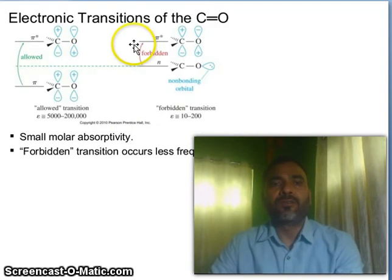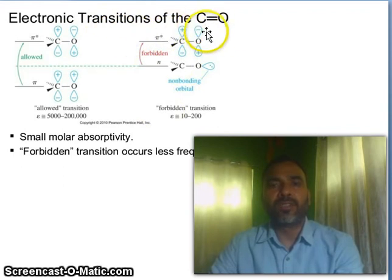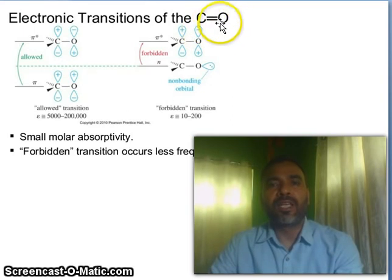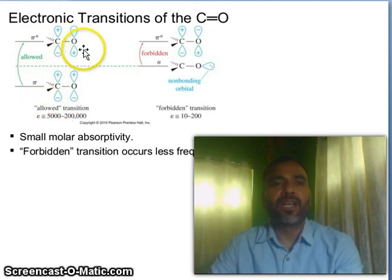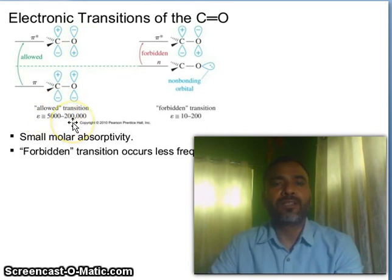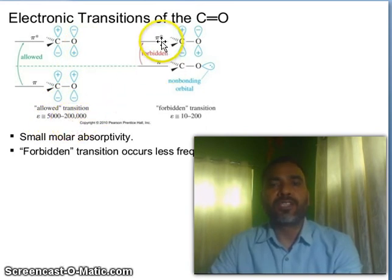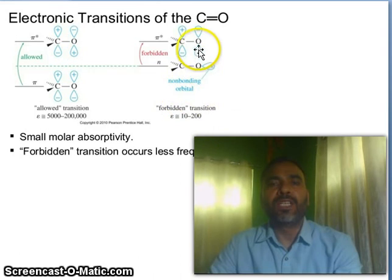Now consider the electronic transitions of the carbonyl compound. Carbonyl is important because both pi to pi star and n to pi star transitions are possible. The pi to pi star transition is an allowed transition — you can see the epsilon value is much, much higher. But n to pi star transition, from non-bonding orbitals to anti-bonding orbitals, is a forbidden transition.